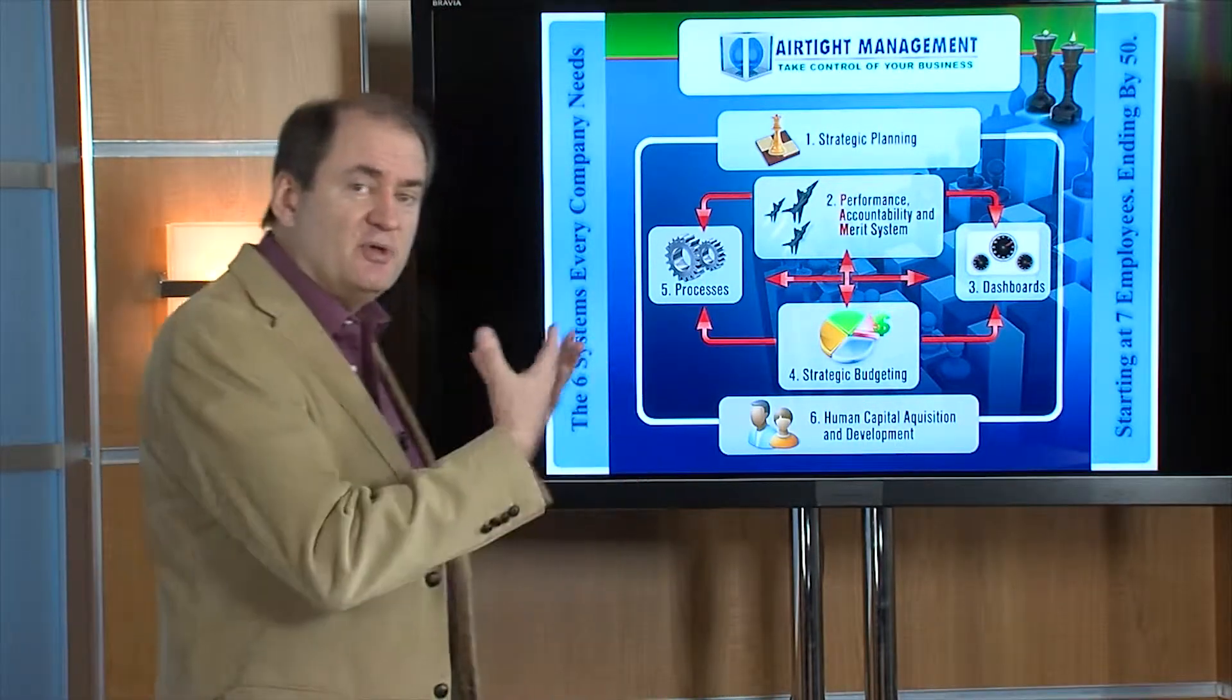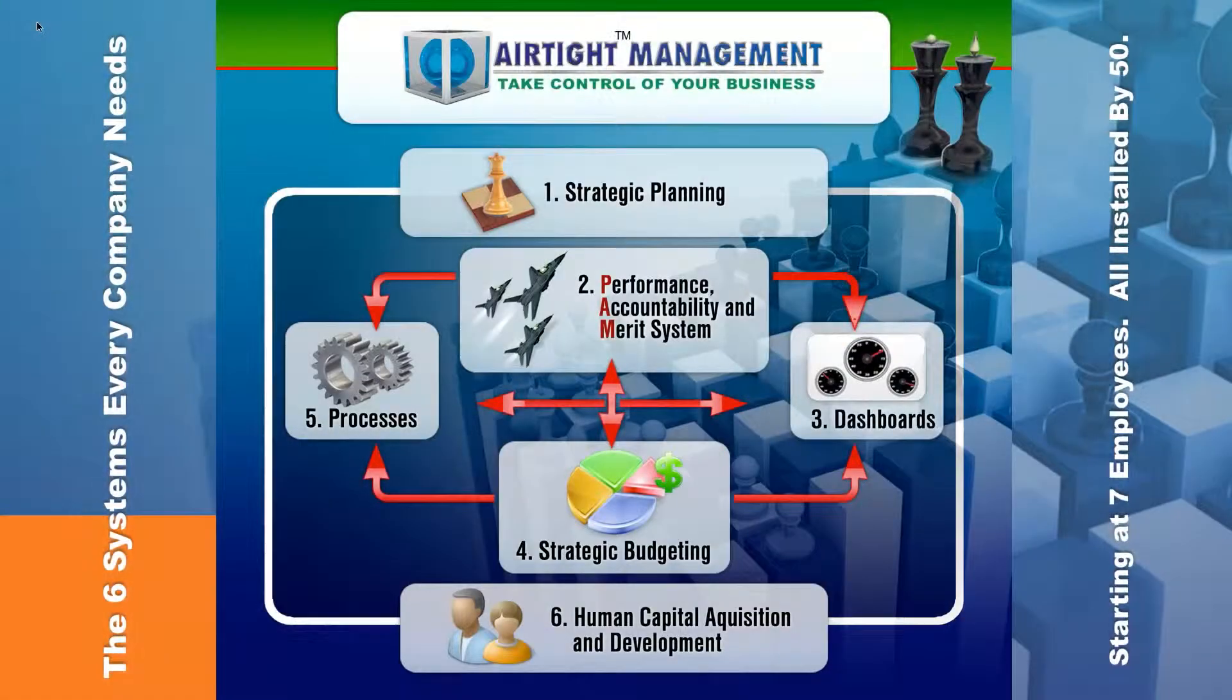If you implement all six of these systems, you'll have a holistic self-correcting system that creates a culture I call a Darwinian meritocracy.